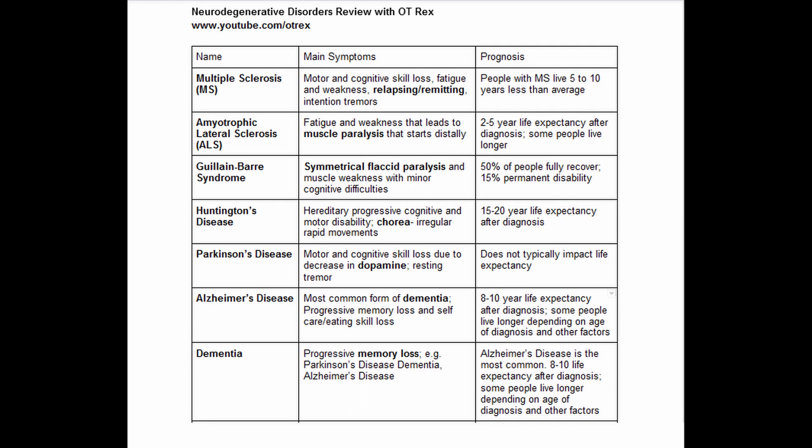Guillain-Barré syndrome is associated with symmetrical flaccid paralysis, which I think is very unique to Guillain-Barré. It also comes with muscle weakness and minor cognitive difficulties, but 50% of people who get Guillain-Barré have full recovery due to remyelination. About 15% of individuals will have permanent disability.